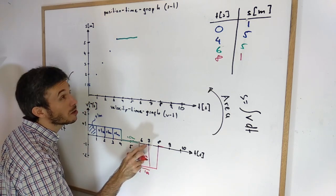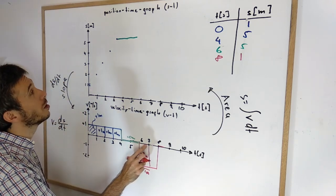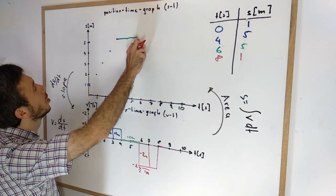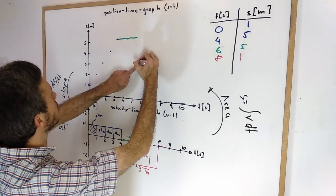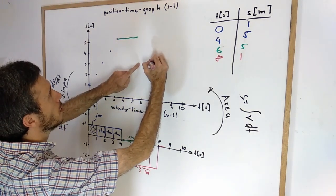So from 6 to 7 I went down by 2 meters. So starting at 5 going down by 2 means I'm going to end up at 3 from 6 to 7. So I'm here.